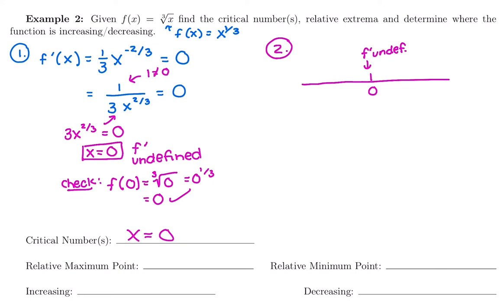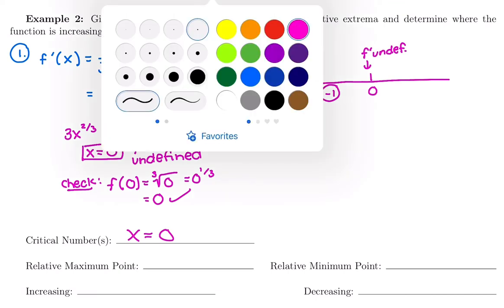And then we can test any number to the left or to the right of 0. So maybe I'll just choose negative 1. Remember, we're going to plug into our derivative on our sign charts. So we don't care about the value of the derivative. We care about the sign of it.